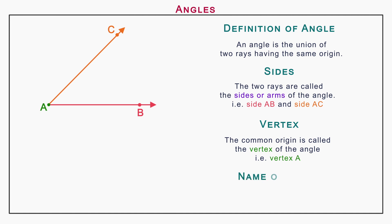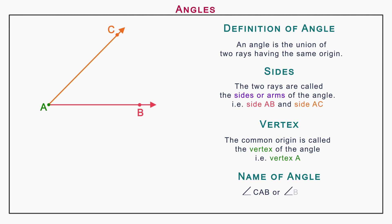Now to name the angle, we start from the point C, then to the vertex A, and then to the point B. Thus, we name the angle as angle CAB, or you can also name it as angle BAC.